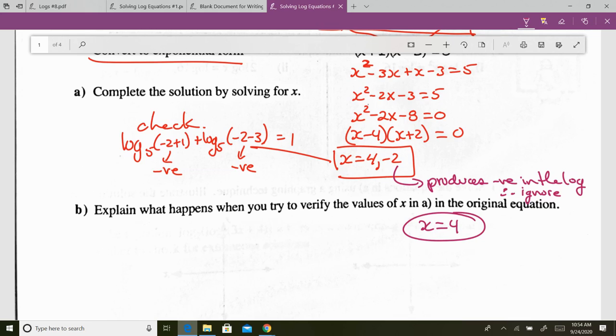So you have to check. Whenever you do things like this, whenever you generate a quadratic and you get two answers, you must check your answers. To make sure that it doesn't produce a negative number. Always check your answers. Because if you write 4, negative 2, I'm going to take a mark off. Because it's not technically right. You have to just say, it's only 4. Ignore the negative 2.